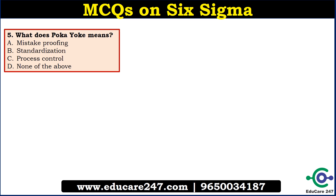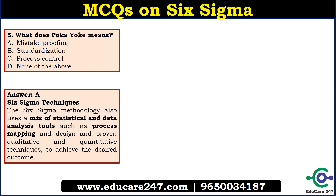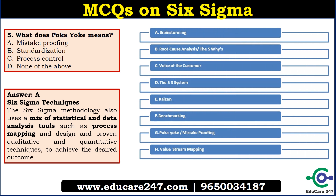The next question is: what does POKAYOKE mean? The answer is mistake proofing. It is a kind of Six Sigma technique. Six Sigma methods are full of statistical and data analysis tools — both qualitative and quantitative — that can be used for desired outcomes. The list of Six Sigma techniques includes: brainstorming, root cause analysis, the 5-Why technique, voice of customer, 5S system, Kaizen, benchmarking, POKAYOKE (mistake proofing), and value stream mapping.